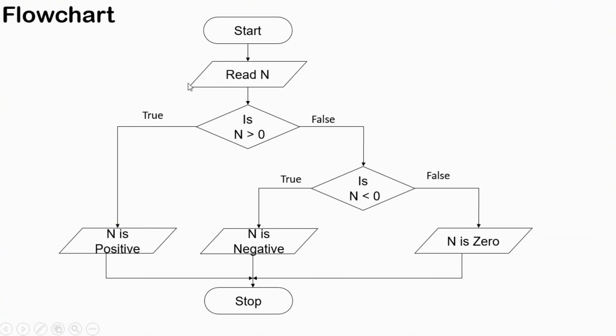Now let's look at the flowchart. We start, then read a number N. Then the first condition: is N greater than zero? If true, it displays 'N is positive' and the program stops. If false, it goes to the next condition: is N less than zero? If true, it displays 'N is negative' and the program stops. If this condition is also false, it displays 'N is zero' and the program stops.